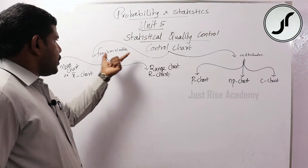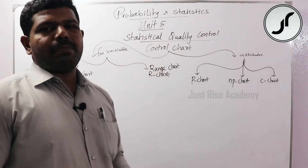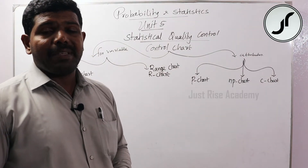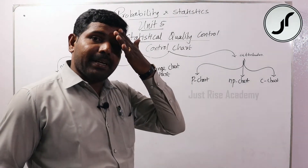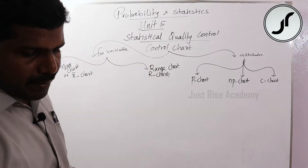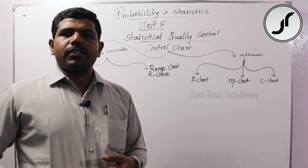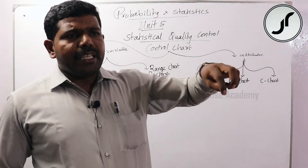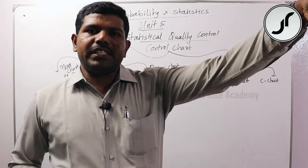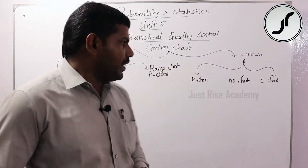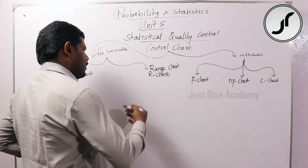For control chart for variables, the X-bar chart and R-chart are most likely to be asked in the exam. We apply the mean chart and range chart. For example, sample number is 10 samples, with a sample size of 5 students per sample.